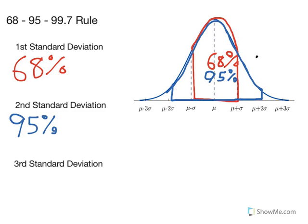Now, the third standard deviation has 99.7% of the data.